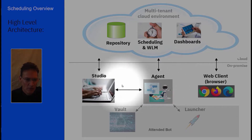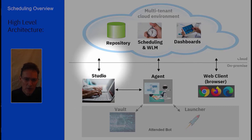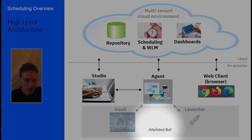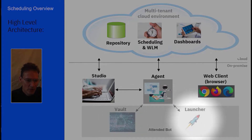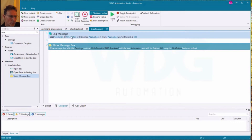Then of course we have the studio, which is a component to build your bots in the first place and to publish to the cloud, making sure you select the schedulable option which I'll take you through in a minute. This section here which is grayed out is the attended bot section, so we're not going to talk about the client-side vault or the launcher because they're both used for attended bots only.